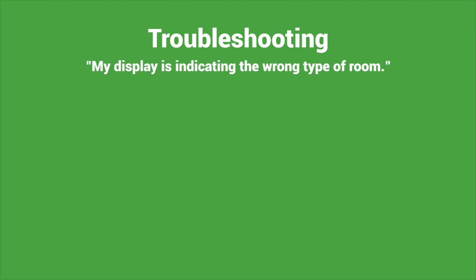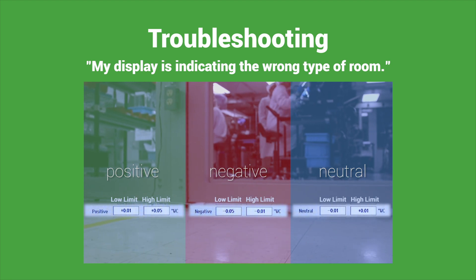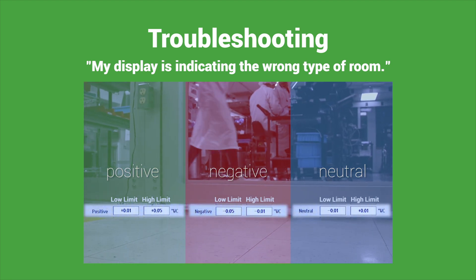If you have a negative room but the display is indicating positive room, check the alarm set points. Make sure they correspond to the proper kind of room.